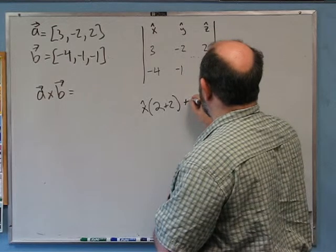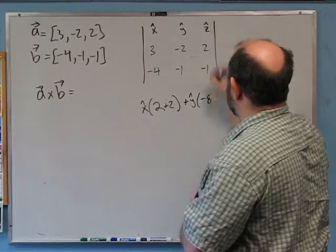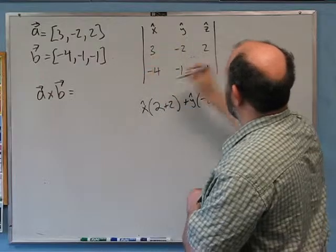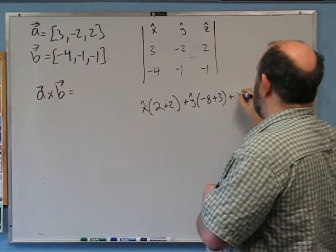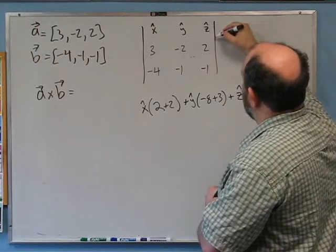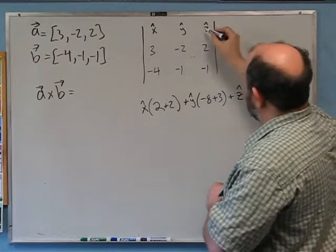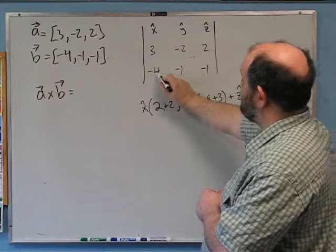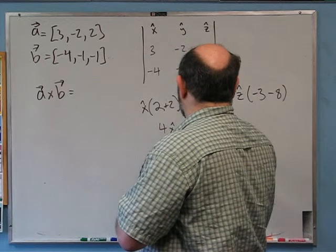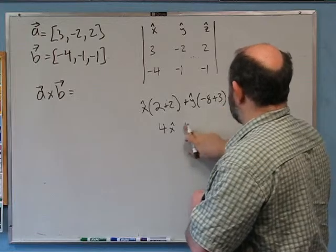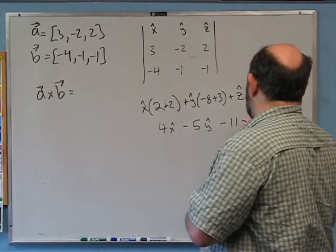Next, y-hat: go down to the right, 2×(-4) = -8. Then subtract going down to the left: 3×(-1) = -3, so subtract -3 giving +3. That's -8+3 = -5 for y-hat. Then z-hat: 3×(-1) = -3, and going to the left: (-2)×(-4) = +8, subtract +8 gives -8. So I get 4 x-hat + (-5) y-hat + (-11) z-hat.